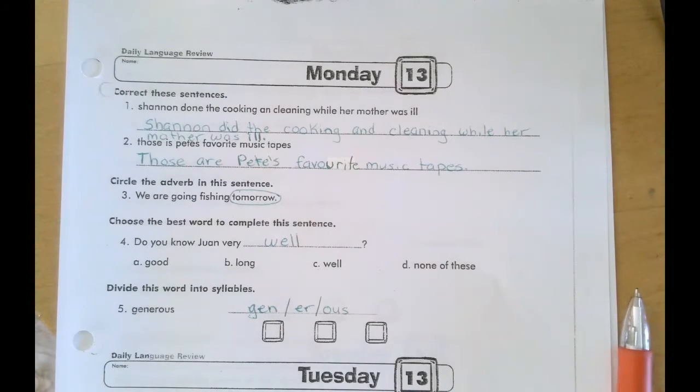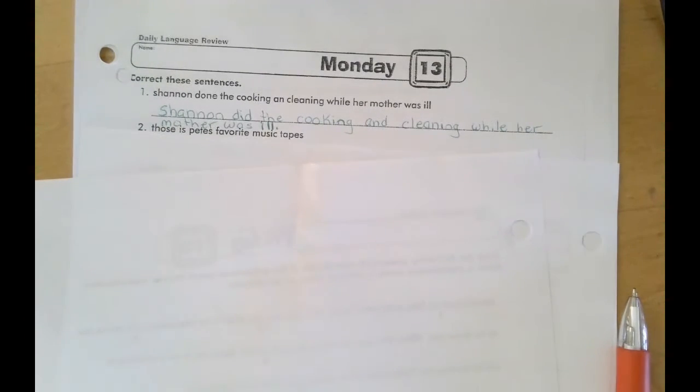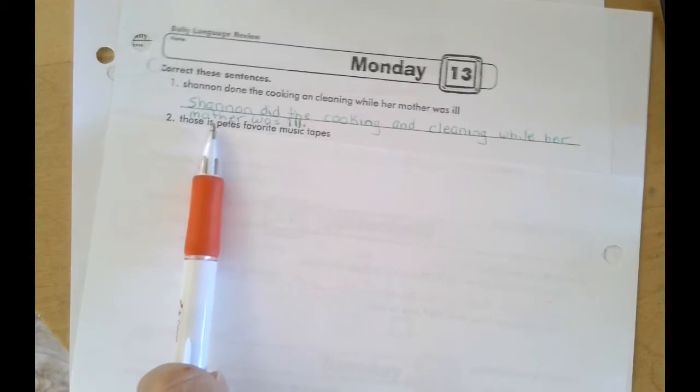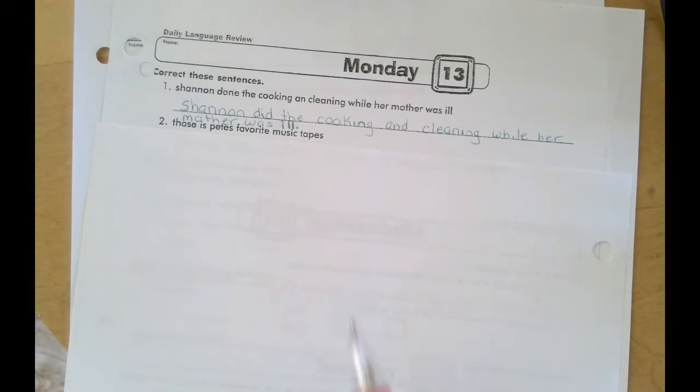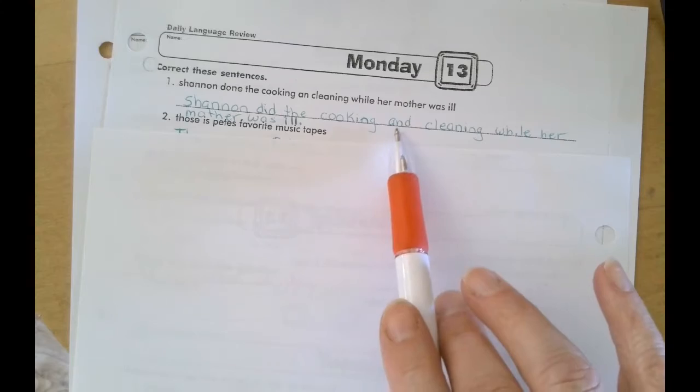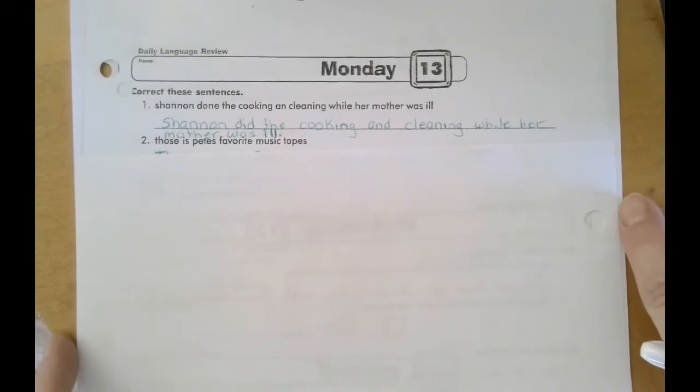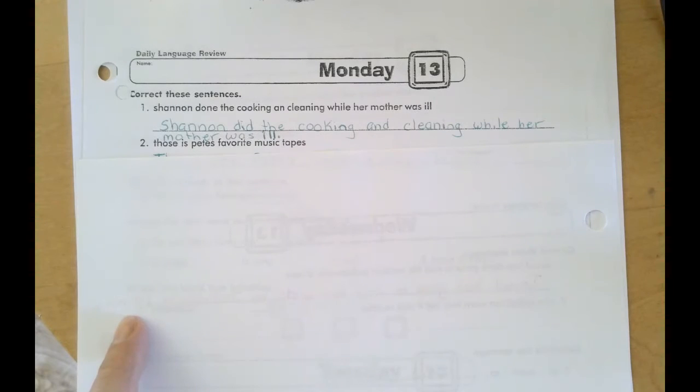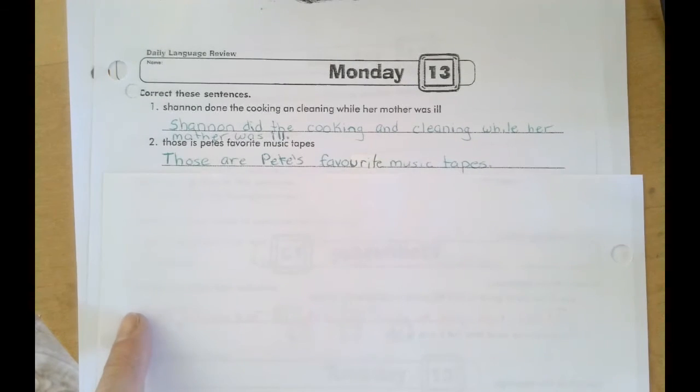Alrighty, guys and ladies, let's take a look at our answers. Number one, Shannon did the cooking and cleaning while her mother was ill. So Shannon should have been capitalized. Done should have been changed to did. The word and should have been changed to and, and you should have inserted a period at the end. Hopefully got all those.